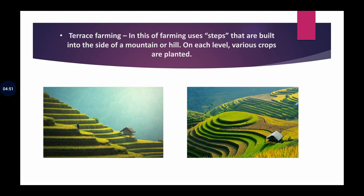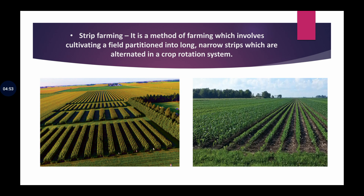Next is strip farming. Maan lo ek open field hai — wahan par hawa aur paani se bahut zyada erosion hota hai. Toh isko rokne ke liye strips banayi jaati hain — jaise pattiyan lagayi jaati hain, chahe grass laga kar, chahe stones rakh kar. Jis se agar tez hawa chale ya tez baarish ho, toh ye obstacle ka kaam karte hain, rukawat ka kaam karte hain, aur mitti ko erode nahi hone dete.